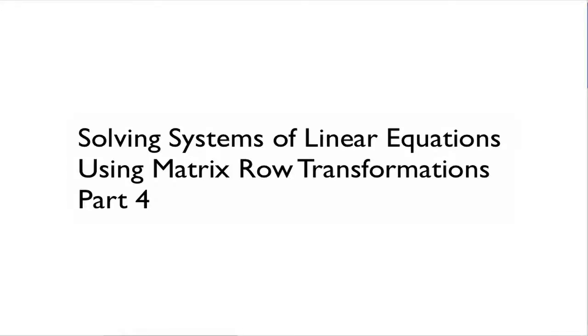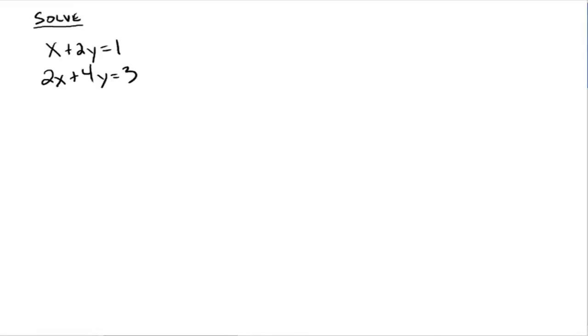This is part four of solving systems of linear equations using matrix row transformations. Here's our system. Write that in augmented form, then it looks like one, two, one, and two, four, three.